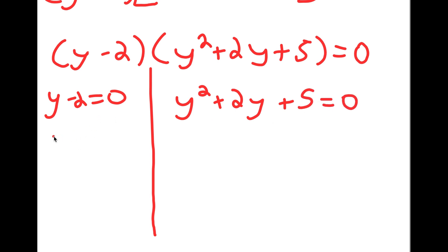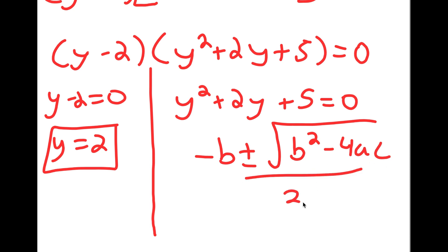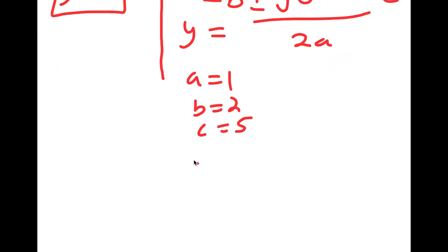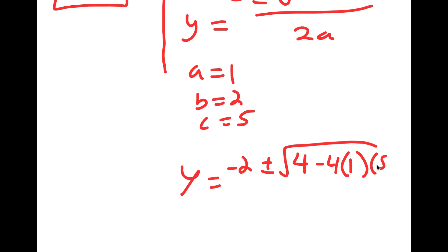For y minus 2 equals 0, y is obviously equal to 2. For y squared plus 2y plus 5 equals 0, we're going to use the quadratic formula, which is negative b plus or minus the square root of b squared minus 4ac all over 2a. In this case, a is 1, b is 2, and c is 5. So I get y is equal to negative 2 plus or minus the square root of 2 squared, which is 4, minus 4 times 1 times 5, all over 2 times 1.